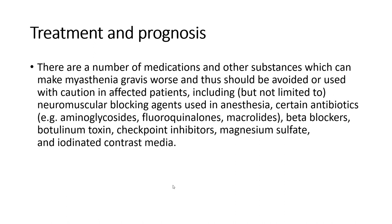There are a number of medications and substances which can worsen Myasthenia Gravis and should be avoided or used with caution. These include neuromuscular blocking agents used in anesthesia, certain antibiotics such as aminoglycosides, fluoroquinolones, beta-blockers, botulinum toxin, checkpoint inhibitors, and iodinated contrast media.